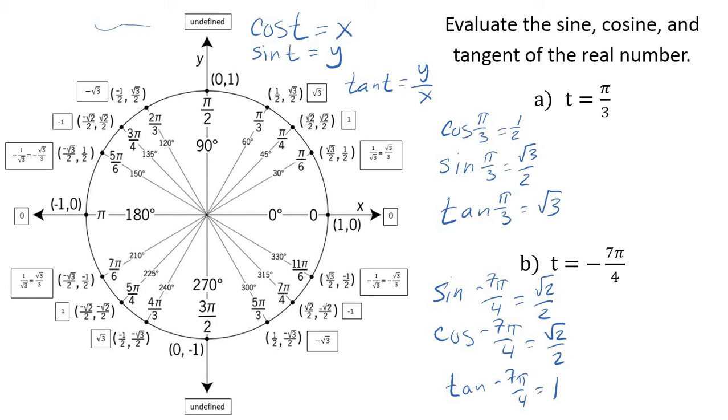So if they give you an angle or a t value, then you just count your way. Go find it on the unit circle. The cosine is going to be the x-coordinate. The sine will be the y-coordinate. And then tangent will be that ratio.